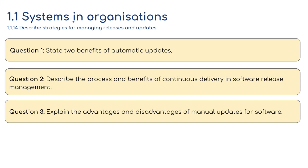As always, three questions. State two benefits of automatic updates. Describe the process and benefits of continuous delivery in software release management. Explain the advantages and disadvantages of manual updates for software. These can be short answers — we're looking at anywhere between two and four marks.